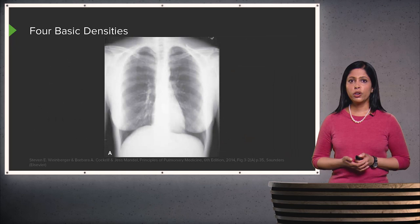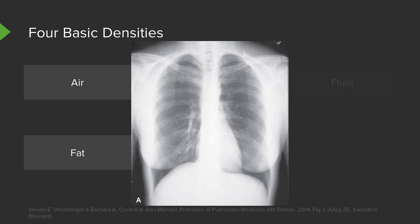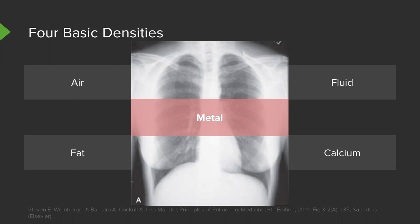There are four basic radiological densities: air, fat, fluid, and calcium. These are the four you'll see over and over again in all the different types of imaging modalities you'll encounter. There's also a fifth type of density, which is metallic, and we see this more and more frequently as patients have multiple metallic objects placed within them, such as prostheses and valves.